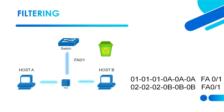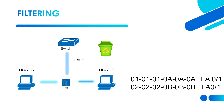There is a packet from Host A that wants to reach Host B. When the hub receives the packet, it broadcasts it so that both the switch and Host B receive the packet. When the switch receives the packet, it sees that the source MAC address is from FastEthernet 0/1 and the destination MAC address is also from FastEthernet 0/1, so it decides the packet is already sent to the destination and discards it.